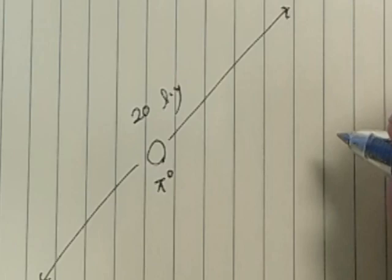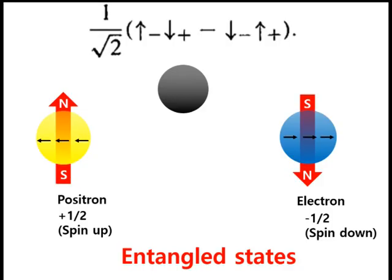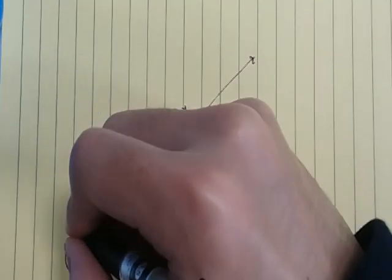Now, as the pion has zero spin, by the conservation of angular momentum, if the electron is found to have spin down, the positron must have spin up.